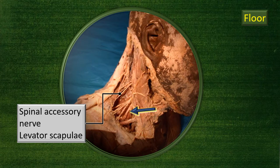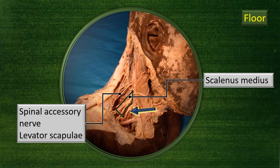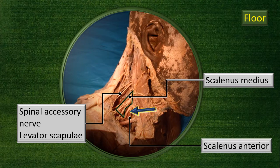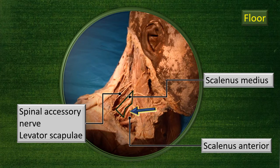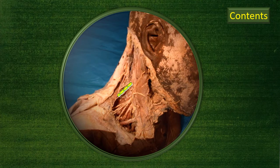Lower down, the flashing blue arrow marks the upper trunk of the brachial plexus for reference. The area behind the arrow is the scalenus medius muscle, and the area in front of it is the scalenus anterior muscle. Between these two diverging muscles, the roots of the brachial plexus emerge.